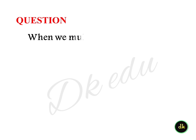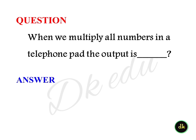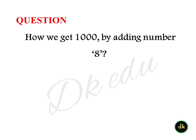When we multiply all numbers on a telephone pad, the output is? Answer: Zero. How do we get 1000 by adding numbers using only 8s?